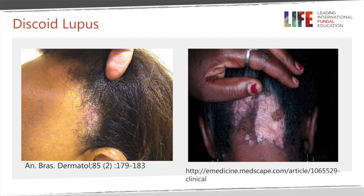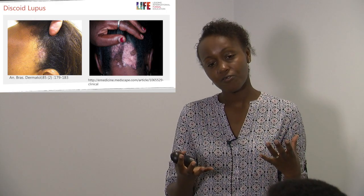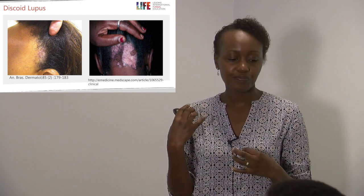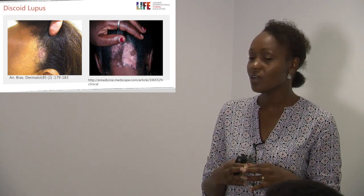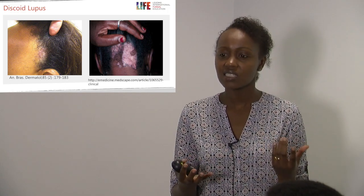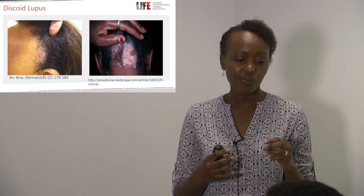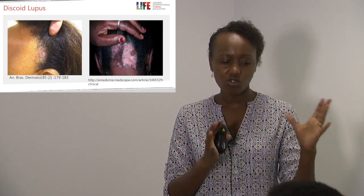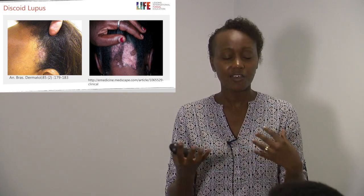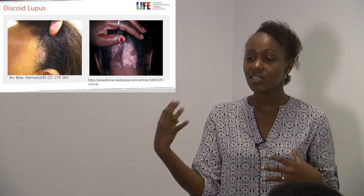For tinea capitis that is recurrent or not responding to treatment, consider discoid lupus. Localized discoid lupus, especially on the scalp, can be difficult to differentiate from tinea capitis. A distinguishing factor is hyperpigmentation — tinea capitis lesions may appear hyperpigmented, while discoid lupus lesions show darker, more pronounced discoloration — along with other systemic symptoms associated with lupus.